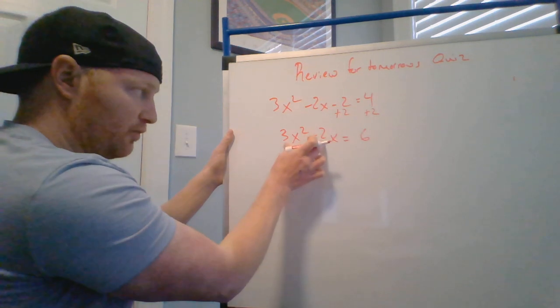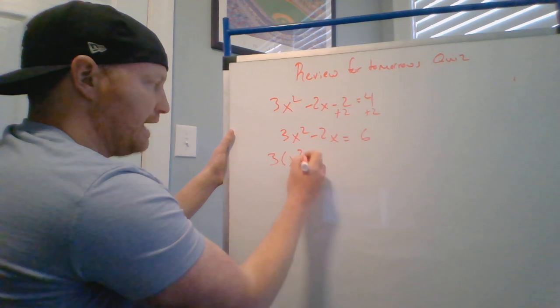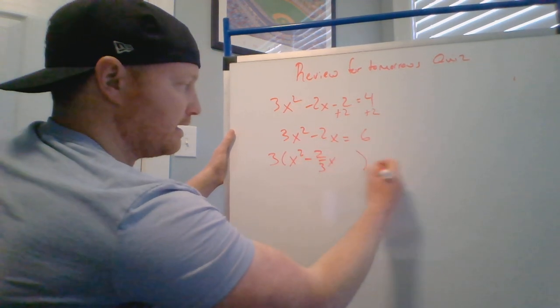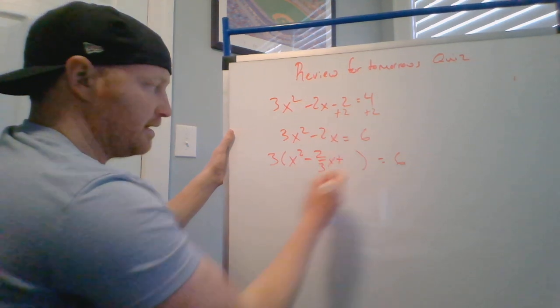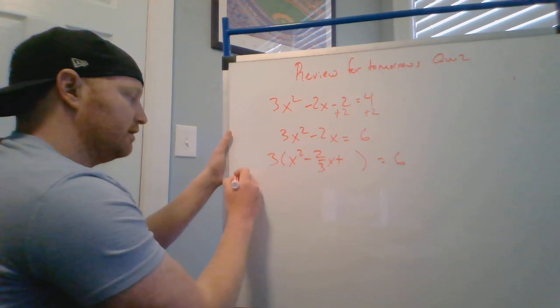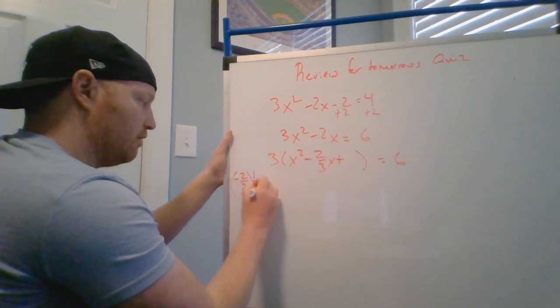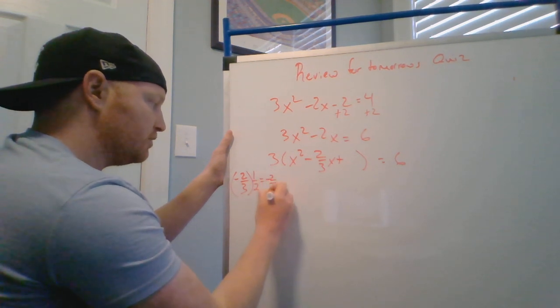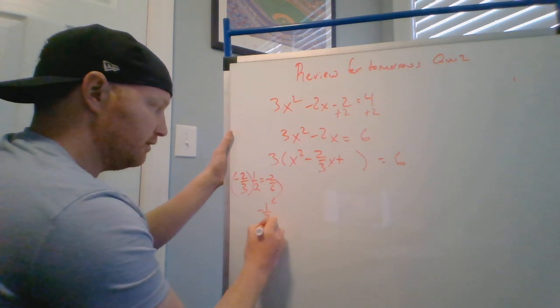I'm now going to divide out the 3 of both of these two terms. So now I get x squared minus 2/3 x equals 2. Now I already know this is going to be plus something. Off to the side, I've got to take half of this and square it. So I got negative 2/3 times 1/2. That's taking half of this, which equals negative 2/6, which reduces to negative 1/3.